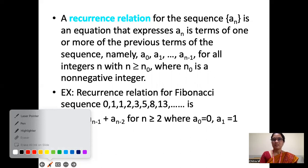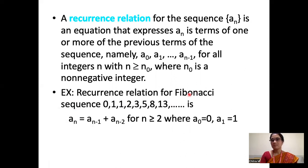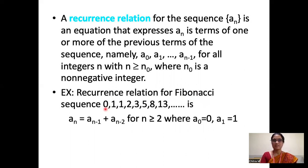For an example of a recurrence relation, let's take a well-known sequence: the Fibonacci sequence. The terms in the Fibonacci sequence are: 0, 1, 1, 2, 3, 5, 8, 13, and so on.